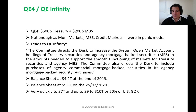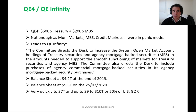On the 15th of March, the Fed announced QE4, which was a $500 billion Treasury and $200 billion MBS package. But in reality, this package was not enough as the money markets, mortgage-backed securities, and overall credit markets were in panic mode. So the Fed had to increase the package and decided to go for the big bazooka — QE infinity. In its statement on the 23rd of March, the committee directed the desk to increase holdings of Treasury securities and agency MBS in the amounts needed to support smooth market functioning, and also to include purchases of agency commercial mortgage-backed securities.